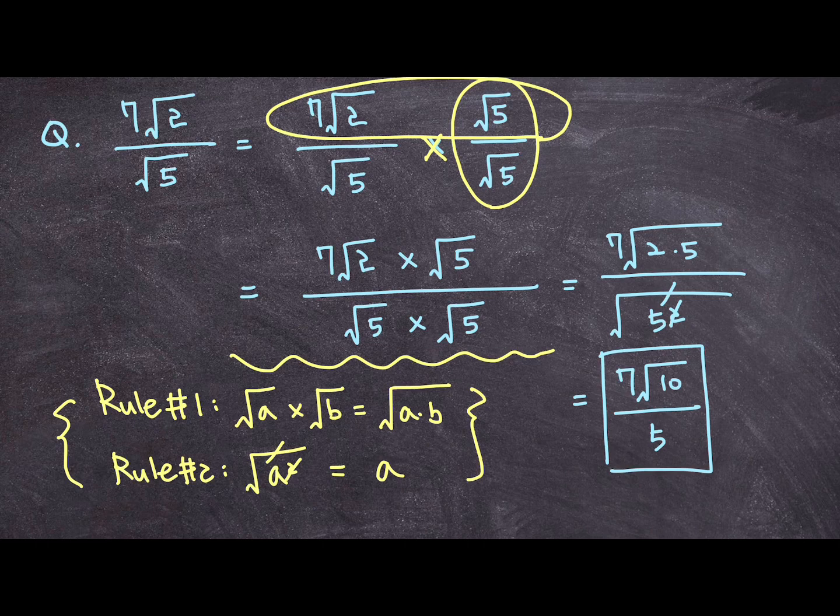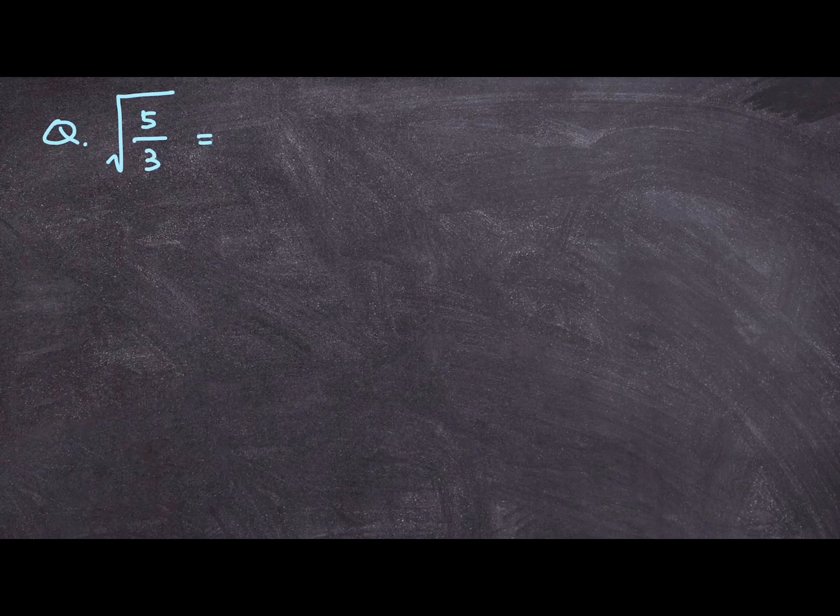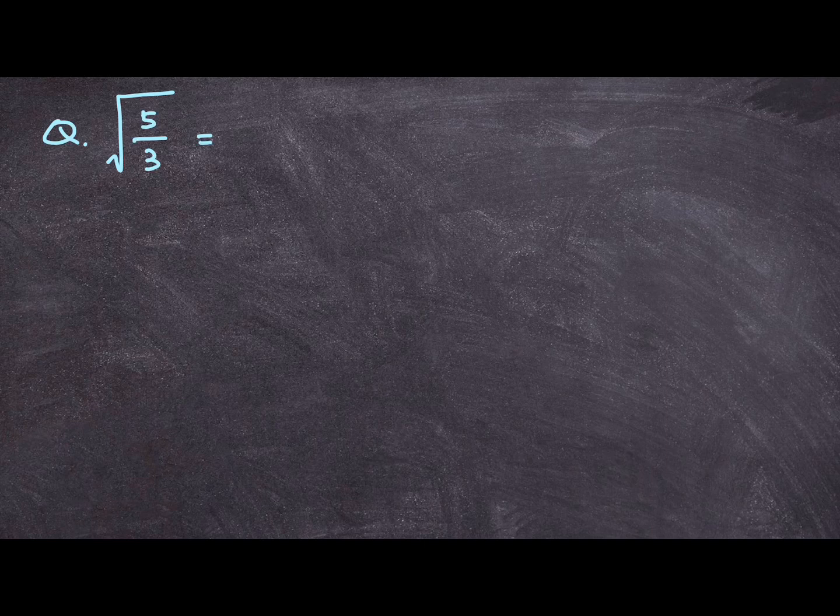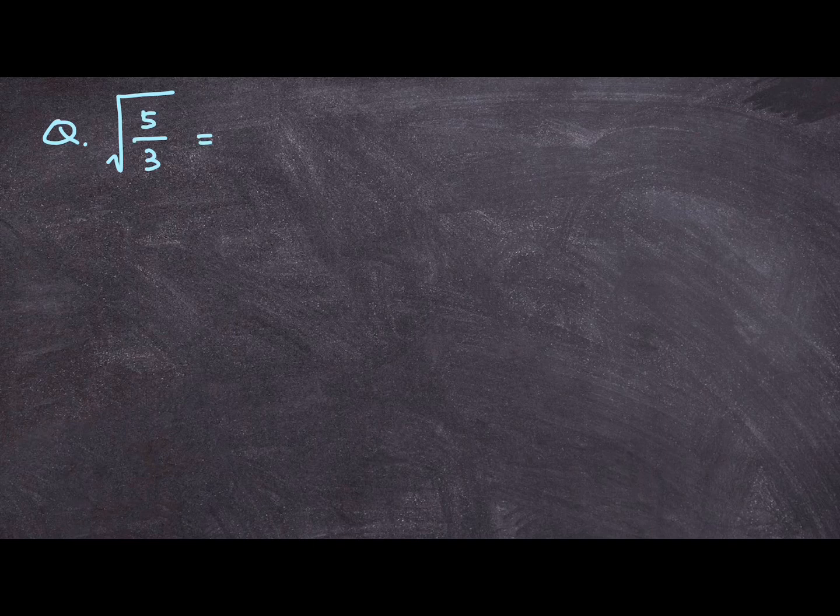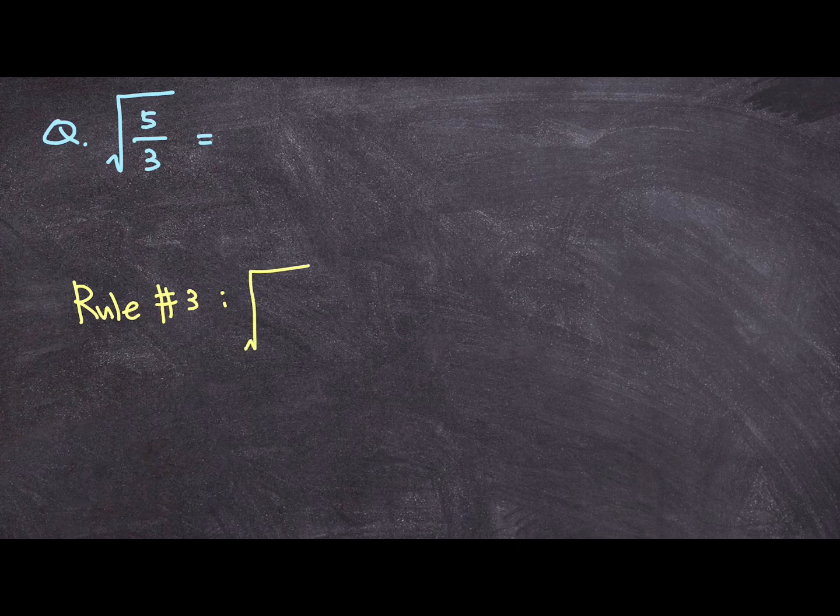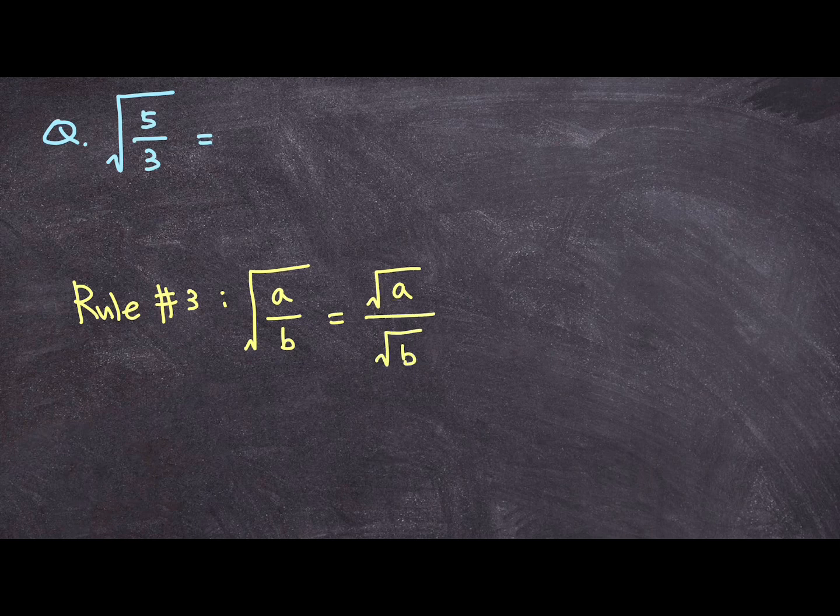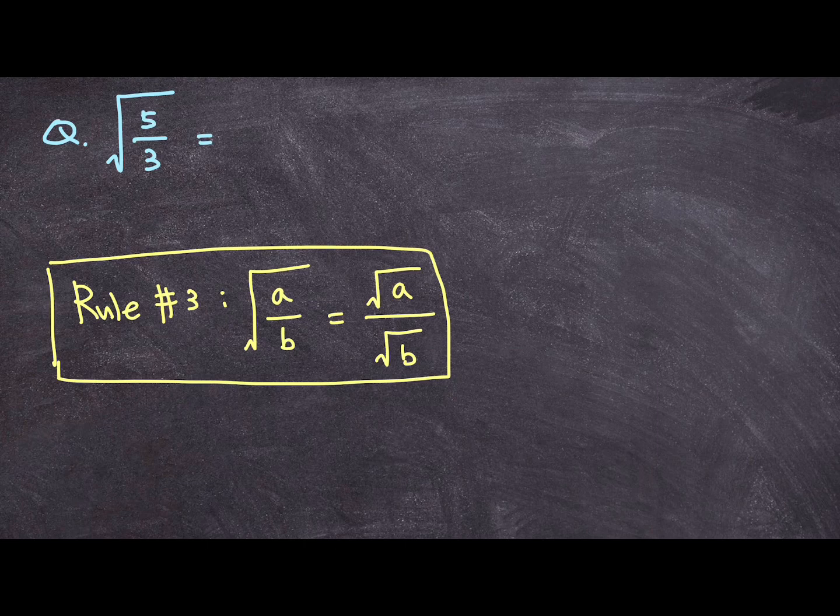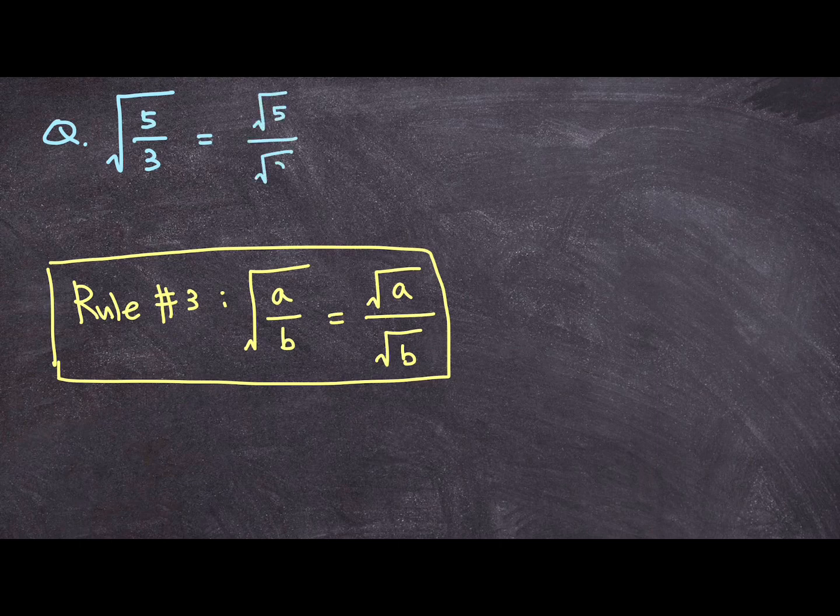Let's just do one more to make sure that we know this for sure. Now I have square root of 5 over 3. Now there's another rule that I want to mention. Let's call it rule number 3. Rule number 3 is square root of a over b equals square root of a over square root of b. Now keeping this rule in mind we can turn this original value square root of 5 over 3 into square root of 5 over square root of 3.